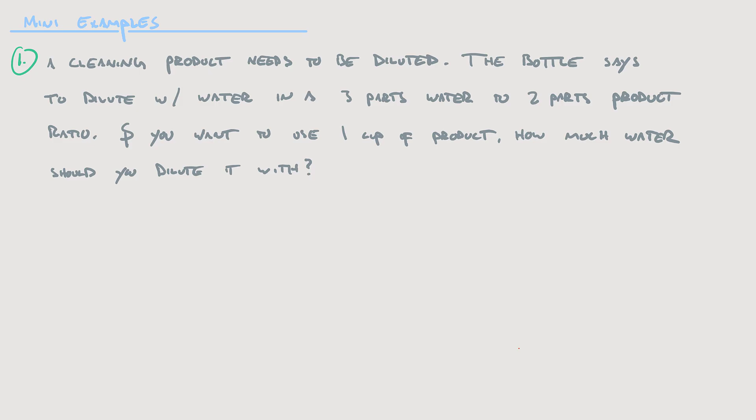Suppose a cleaning product needs to be diluted. The bottle says to dilute with water in a 3 parts water to 2 parts product ratio. Suppose you want to use 1 cup of the product — how much water should you dilute it with? The ratio I get from this is 3 to 2, which you can write as the ratio notation 3 to 2, or as the fraction 3 over 2.